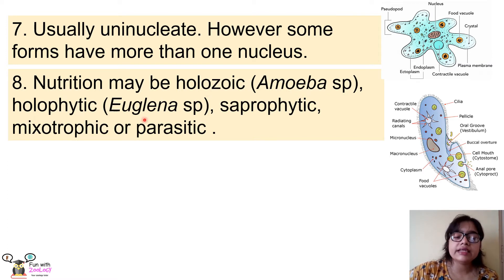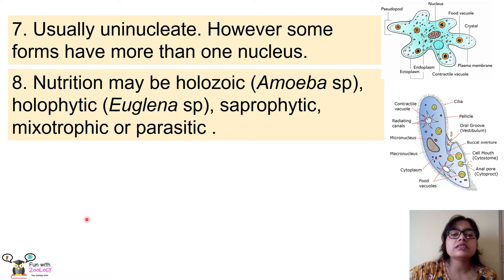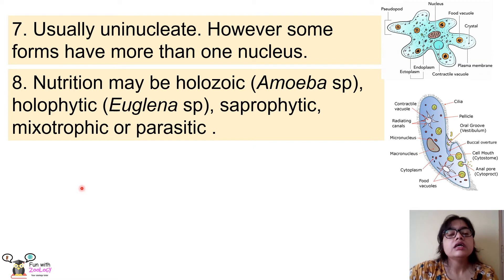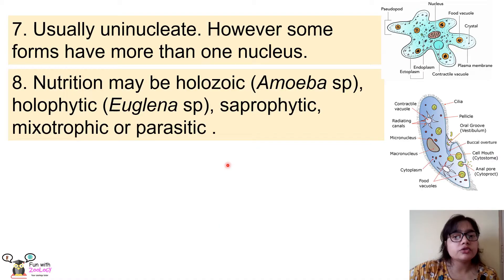The next type is holophytic nutrition, found in Euglena — holophytic means these animals can make their own food. The next type is saprotrophic nutrition, where animals derive their nutrition from dead and decaying organisms. Another type is mixotrophic, where animals have a mixed nutrition — they can make their own food and also derive nutrition from other organisms. The last type is parasitic, where protozoans derive nutrition from other living organisms.